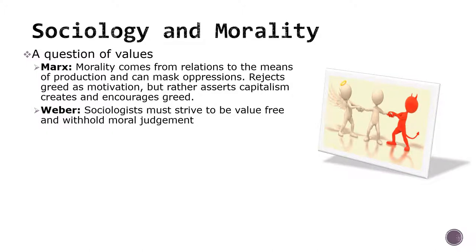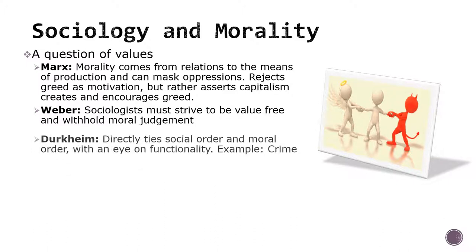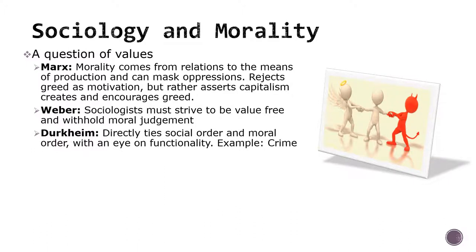Holmes does not cover this in her chapter, but Weber's concept of Verstehen includes striving for what he called value-free study of humans. Weber set aside values in the sense that he believed that the sociologist has to take people as they are, without judging them. Durkheim directly ties social order and moral order. In order for society to function, it must have a sense of what is right and wrong within the system. Those who do wrong may not necessarily be dysfunctional. Holmes points out that Durkheim understood crime as being part of the social structure, functioning as an example and deterrent to others to support the social order.